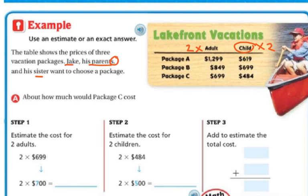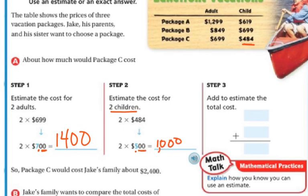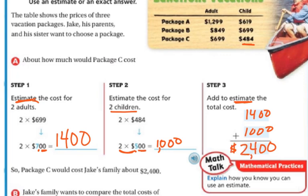First we can estimate the cost of package C. For two adults, $699 is close to $700. Two times 700 — two times 7 is 14, so that's $1,400. For two children, each child is $484, which is close to $500. Two times 500 is $1,000. Adding $1,400 for the adults and $1,000 for the kids gives an estimated total cost of $2,400. So package C would cost Jake's family about $2,400.